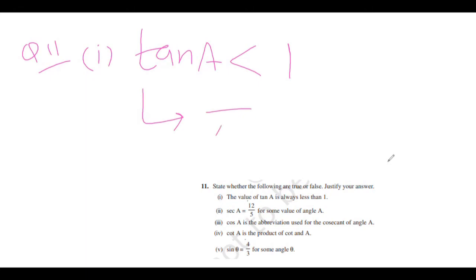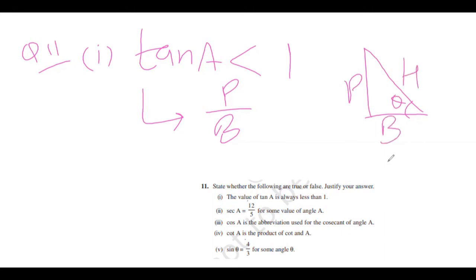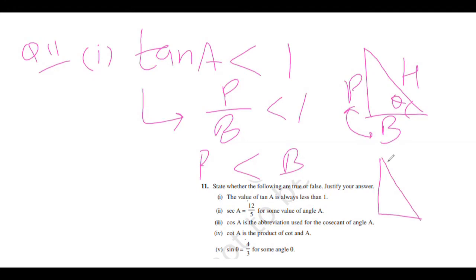They say tan A is always less than 1. Tan A = P/B in a right triangle. Is it always true that P < B? No — the triangle can be oriented either way, P can be larger or smaller than B. So the first statement is false.